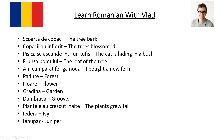Dumbravă is grove. Plantele au crescut înalte — the plants grew tall. You can say, for example, I watered the plants in the garden and they all grew tall: am udat plantele în grădină și au crescut foarte înalte.